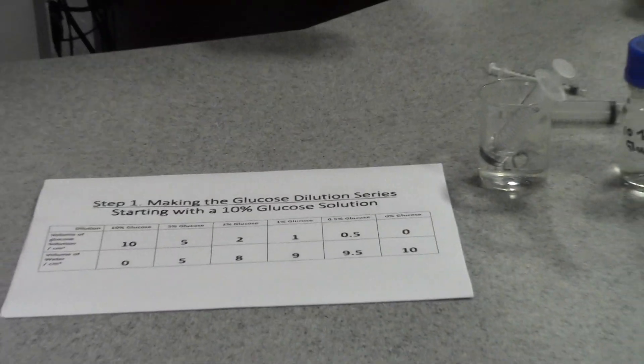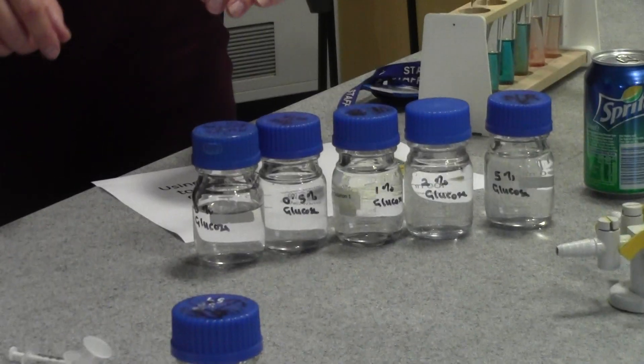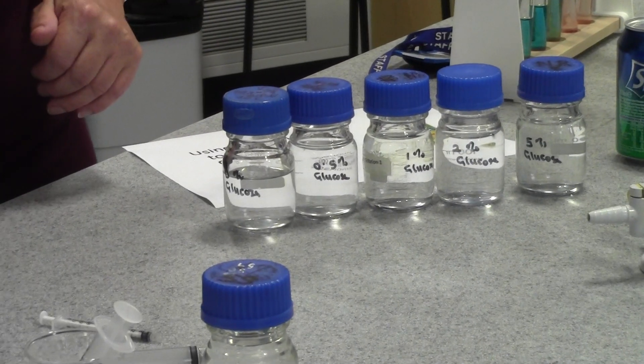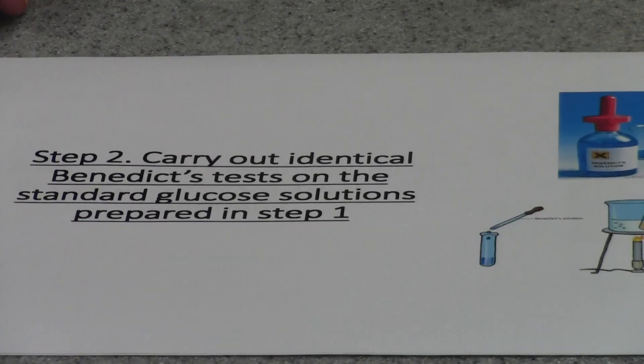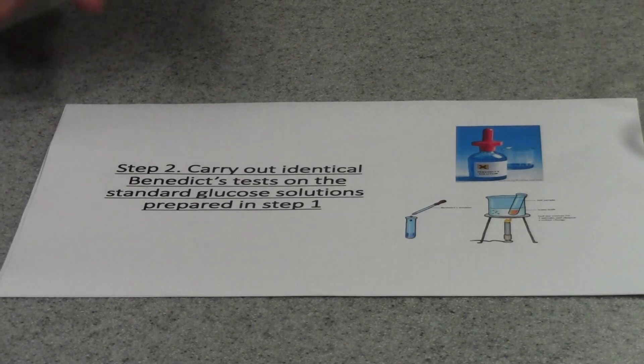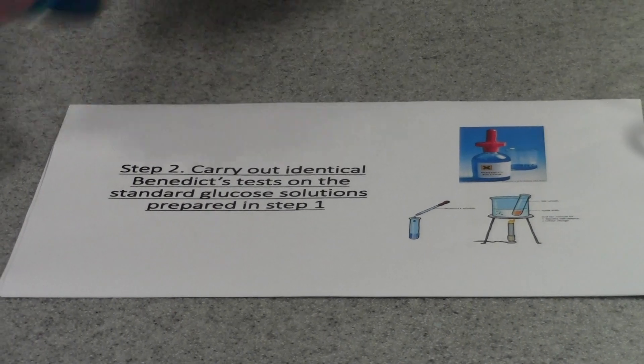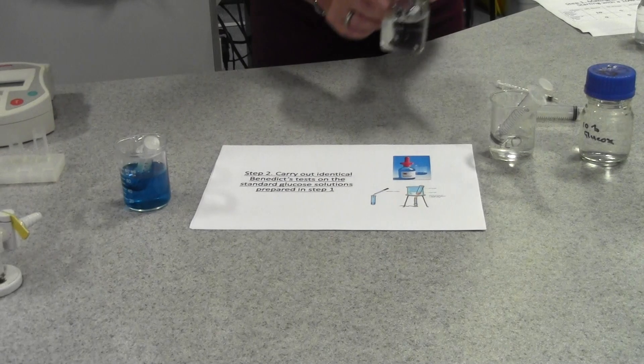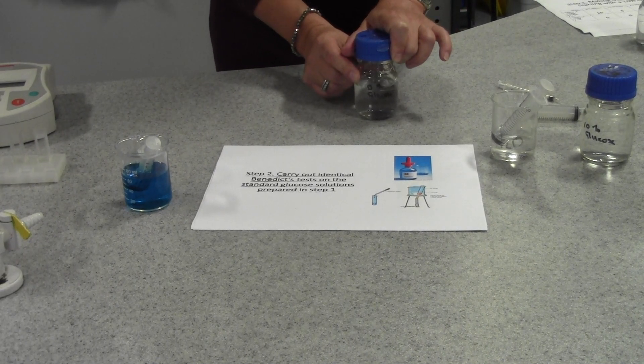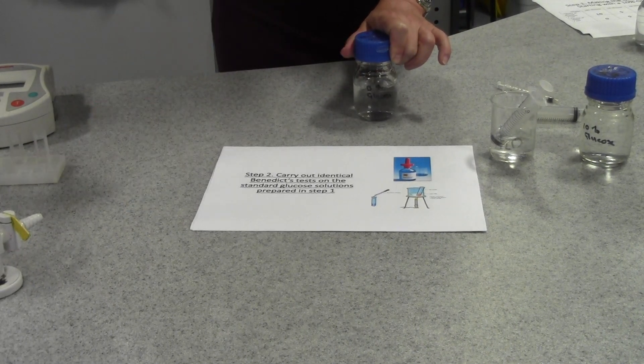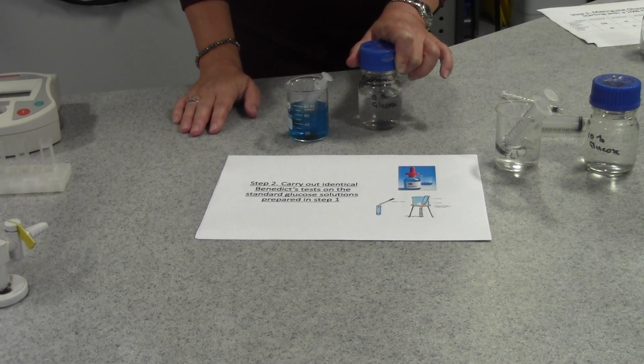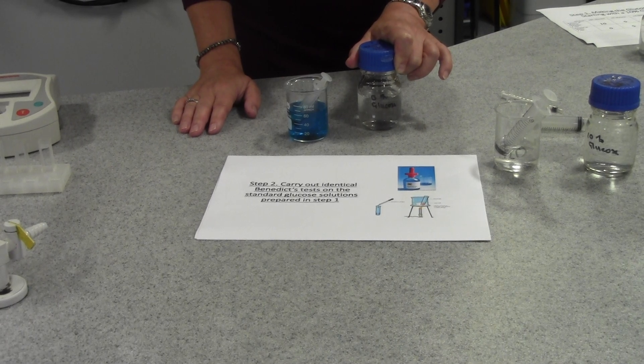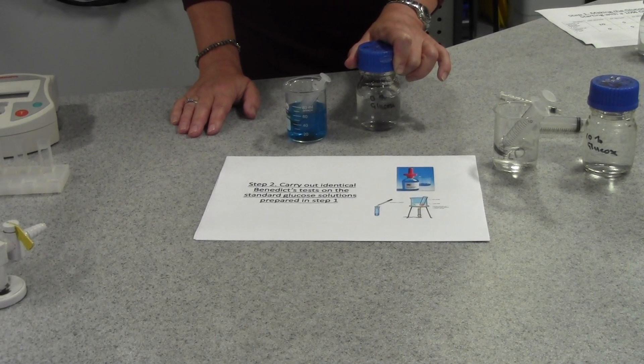Once we've got our range of solutions, the next thing we're going to do is actually carry out a Benedict's test on these solutions. To carry out a Benedict's test, for each solution we will take 1 centimeter cubed of the solution in the test tube and we will add 5 centimeters cubed of Benedict's reagent. We will then place the solutions in a water bath at 90 degrees for 5 minutes for the reaction to take place.